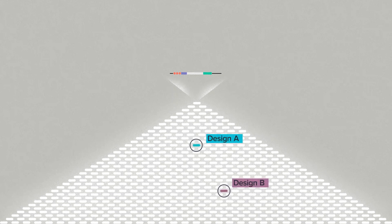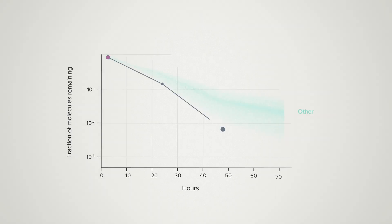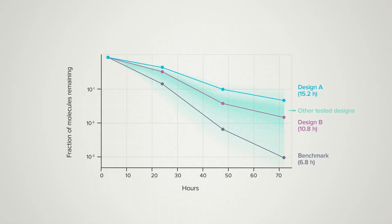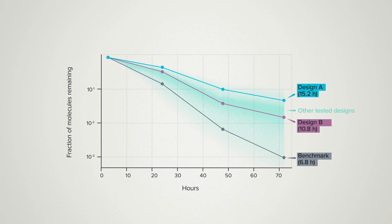For this dataset, we built around 200,000 different sequence variants and transformed them into a cell line to measure how long they last. That data became the input for an AI model, which generated the sequences you see here. Down here is a benchmark sequence commonly used for RNA constructs — it degrades quickly with a half-life of only six hours. We see a lot of constructs with much better stability, and the best designs have more than double the stable half-life.